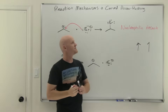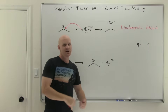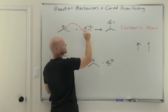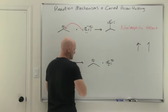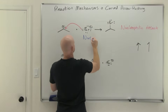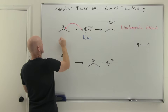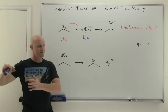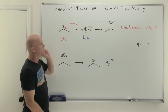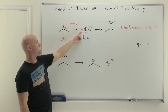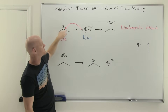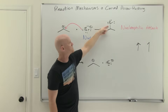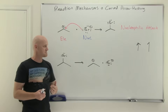We call this nucleophilic attack. The nucleophile attacks the electrophile — the electron-rich species donating electrons to make the bond is the nucleophile, and the species being bonded to is the electrophile. That's one of the more common mechanistic steps throughout organic chemistry. There's just one arrow showing those two electrons being used to make a bond to carbon — those two electrons become the two electrons in the bond. That's nucleophilic attack.